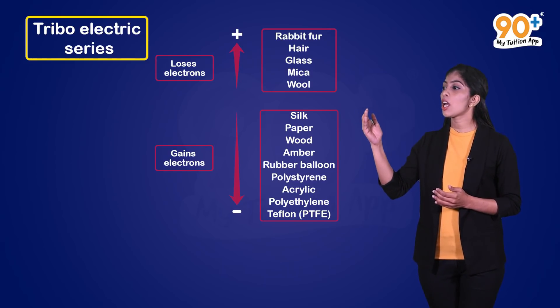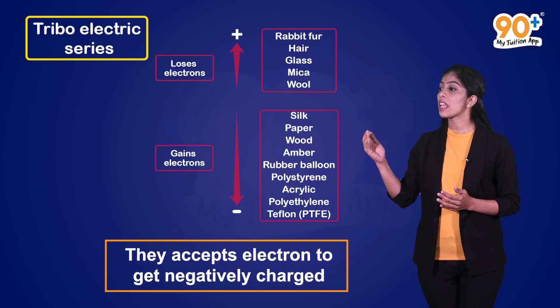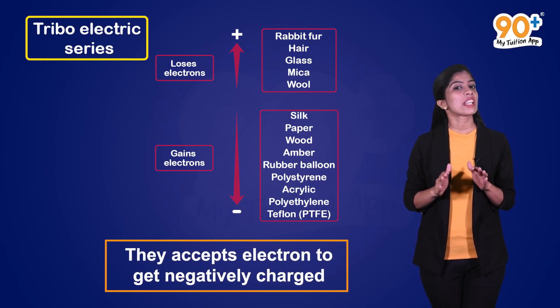Now, see the objects in the down portion. Here, they accept electrons to get negatively charged.